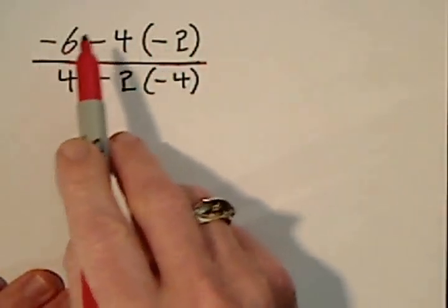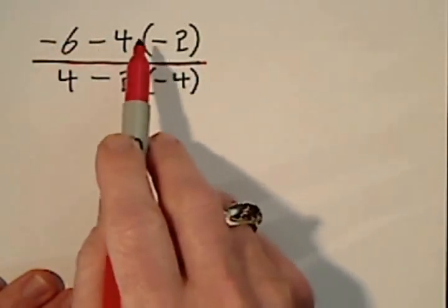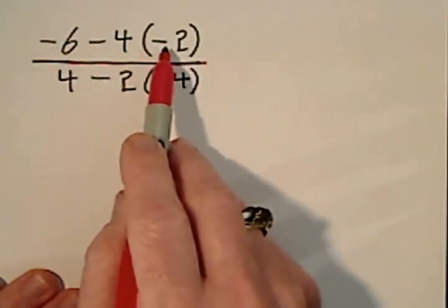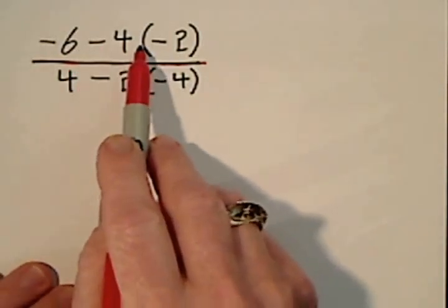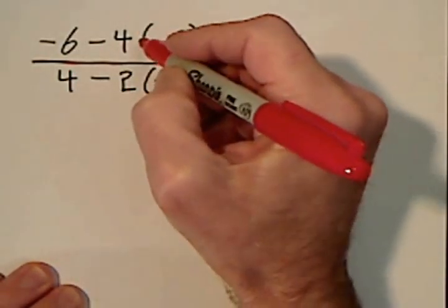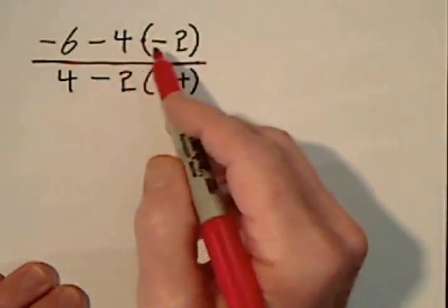So up top we have a negative 6, negative 4 times a negative 2. By default this is addition or subtraction. This is definitely multiplication because you have a number next to a grouping symbol, next to parentheses.